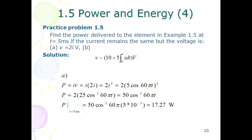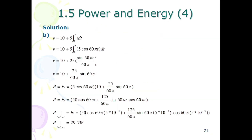Now moving to part B, the voltage is given as 10 plus 5 times the integral from 0 to t of i dt. First we solve for the voltage by substituting the value of current into the expression, finding the integral and applying the limits. Then we multiply current with voltage and substitute t equals 5 ms to get the answer of 29.7 watts.